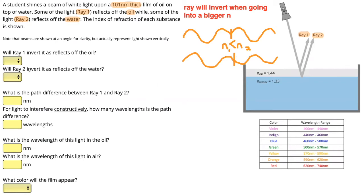For ray one, we're thinking about what happens as it goes from air into the oil. The refractive index of air is one. Going from air into oil, the index goes from 1 to 1.44, so it's increasing. Therefore, based on our rule, the wave will invert. So the answer is yes — ray one will invert when it reflects off the oil.